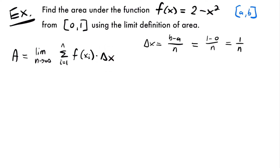Now we have delta x, and the only other thing we need to find is x_sub_i. When using this formula, we want to use right endpoints. This formula represents the area under a curve using an infinite number of rectangles. With right endpoints, x_sub_i equals a plus delta x times i. We could use left endpoints, but that would make the problem significantly harder and give us the same answer.